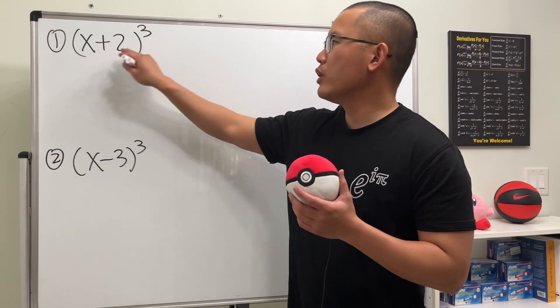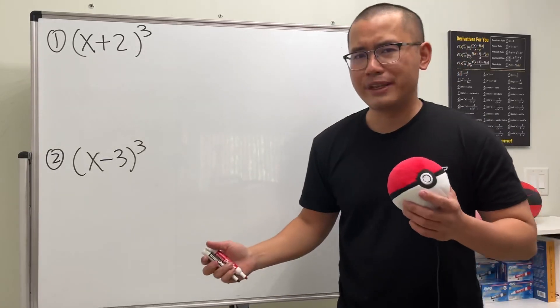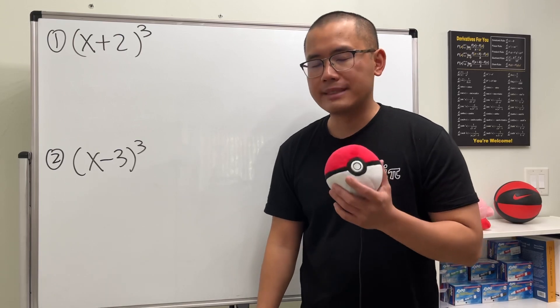How do we expand a binomial to a third power? Of course we can just write this down three times and multiply it out, but that will take too long. Let me show you guys how we can use Pascal's triangle to help us out.